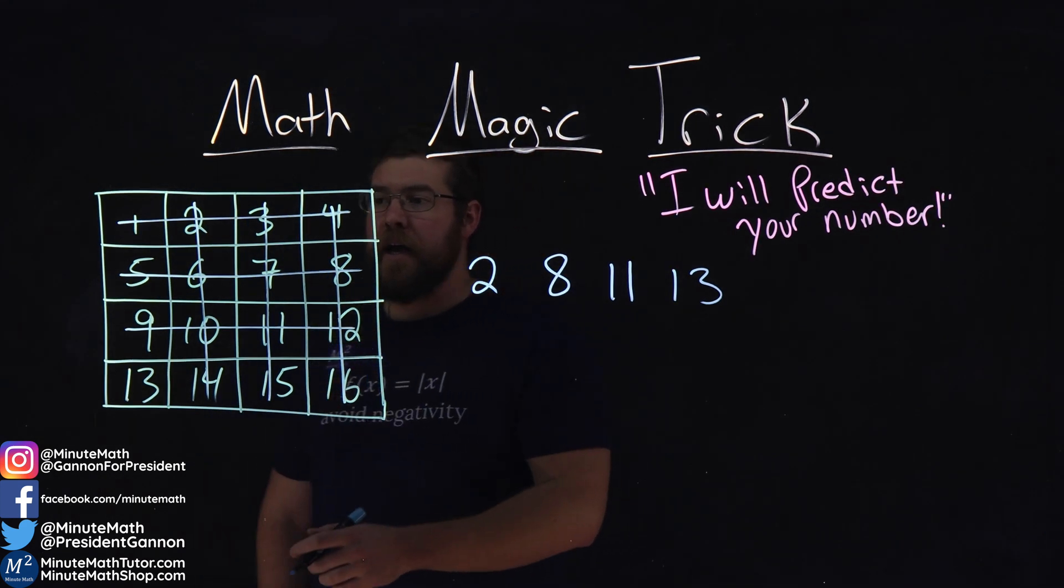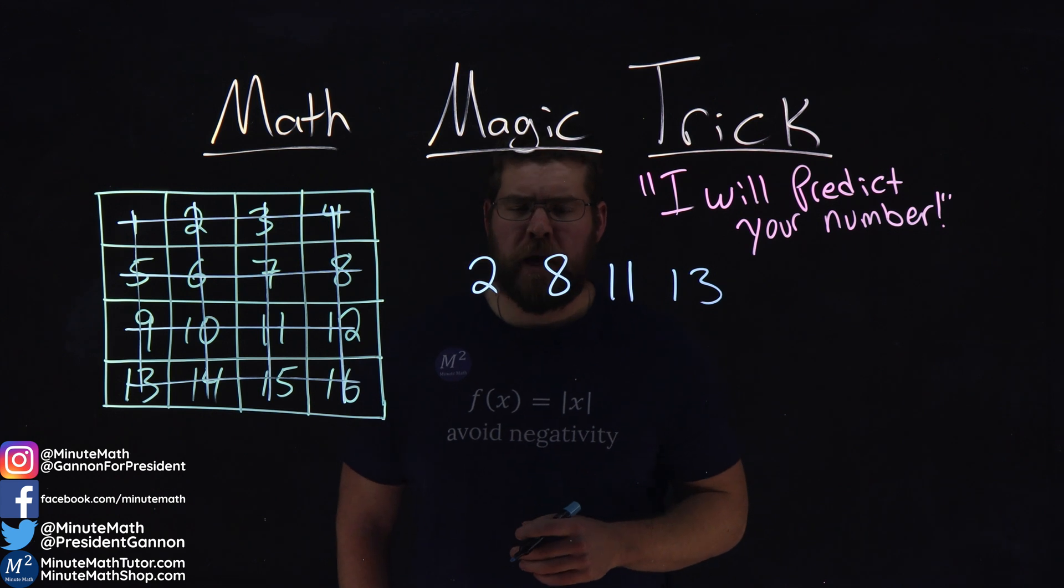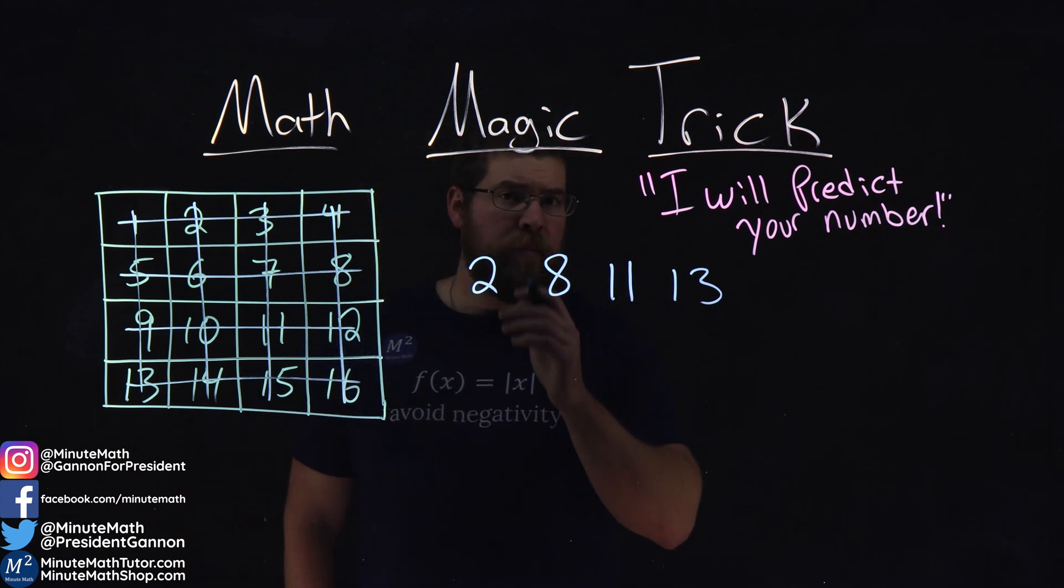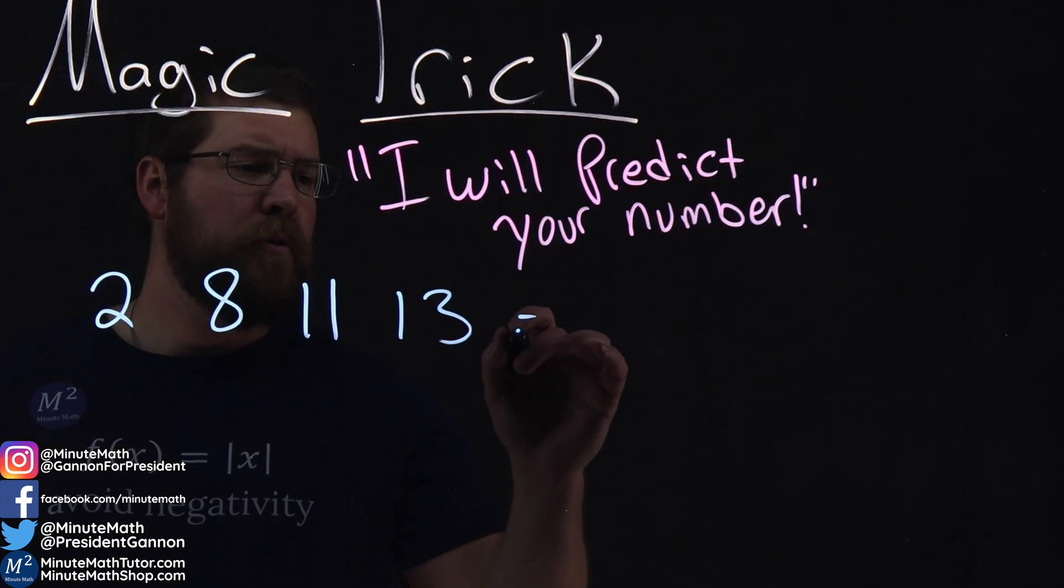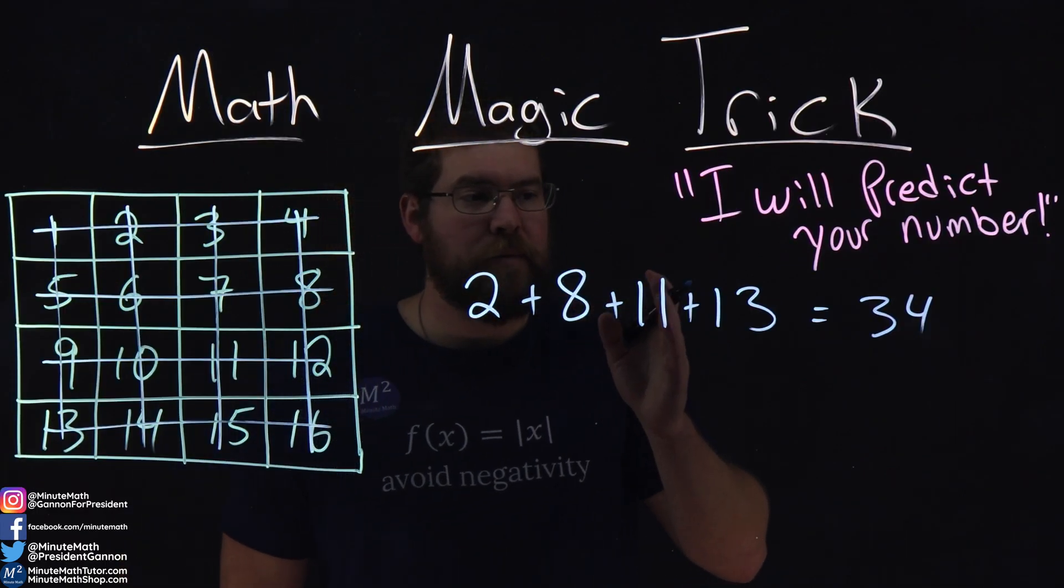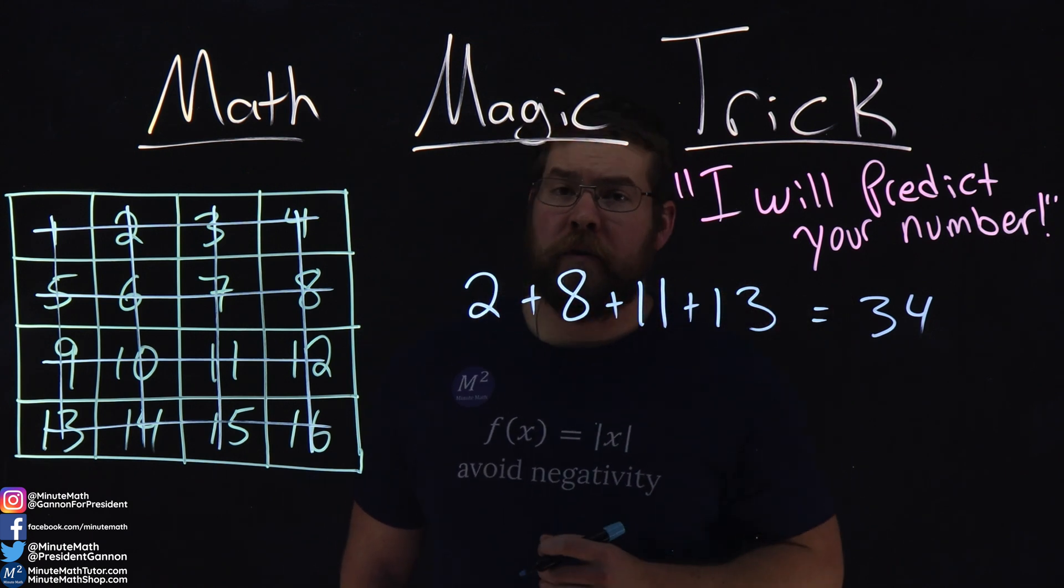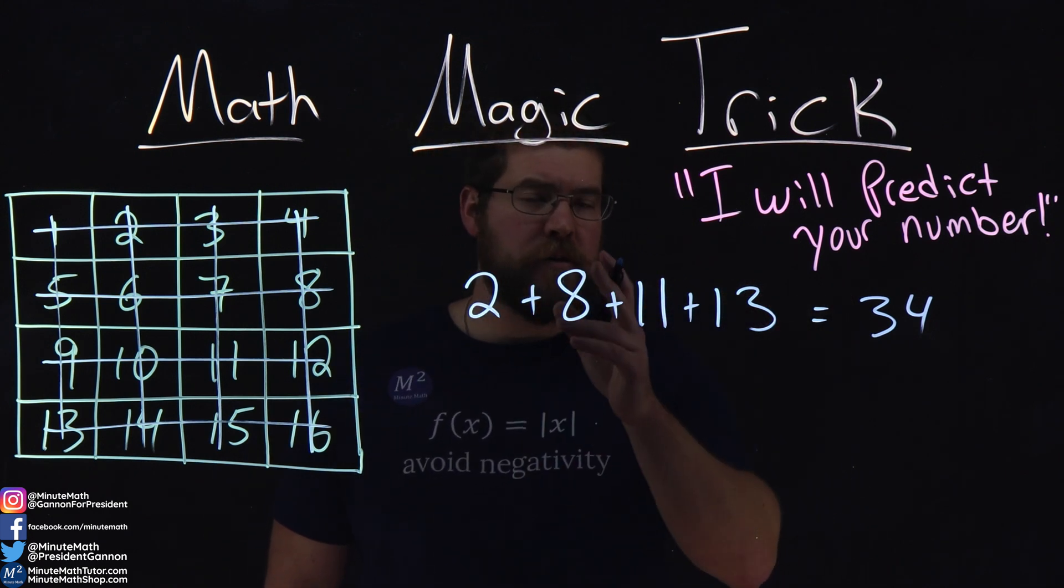So you have your numbers, and I have mine, and we've eliminated all options here with our rules. But I'm going to tell you that if you add up the numbers that you got, you get a 34, just like mine. 2 plus 8 plus 11 plus 13 is 34, and I bet you the numbers that you picked also added to 34.